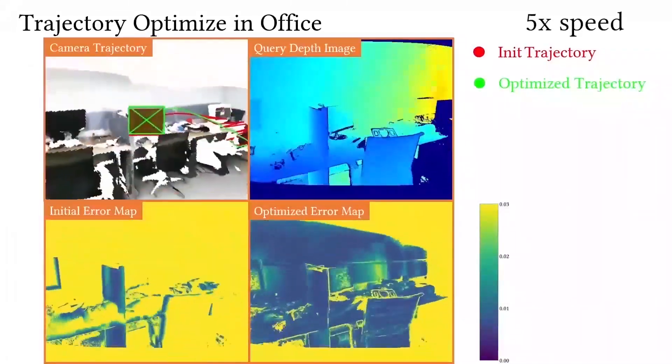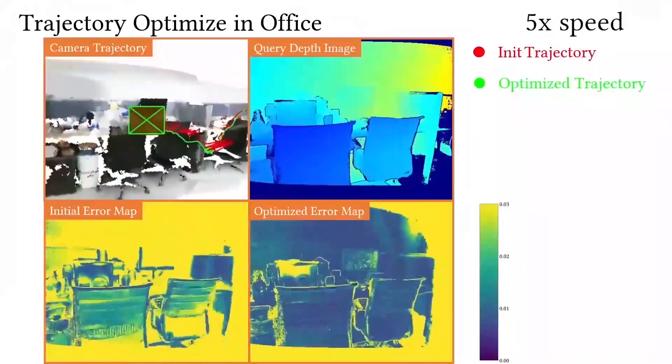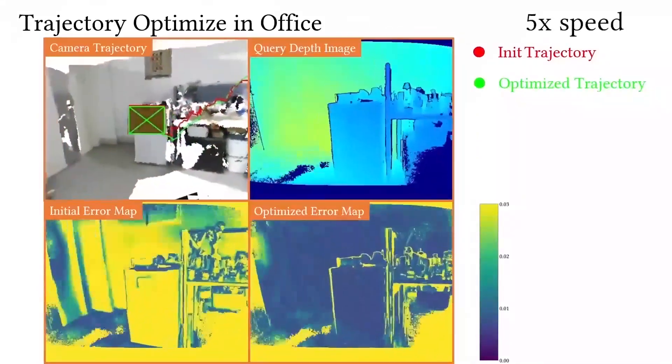We differentiably map the query image to the scene, calculate the error with the scene, and update the pose through iterative optimization.